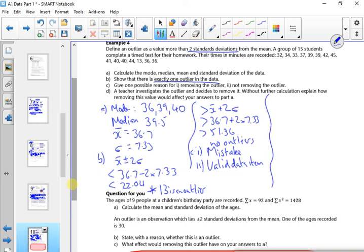And then for D, it says if we remove the 13, what would it do? So if I remove the 13, the mean would increase. But the standard deviation would decrease.